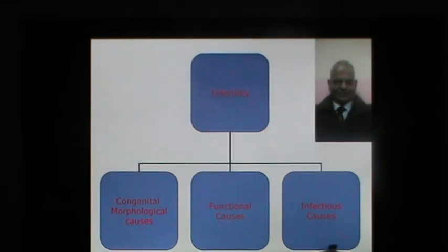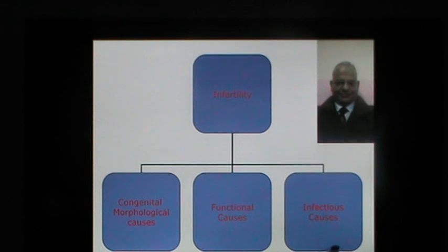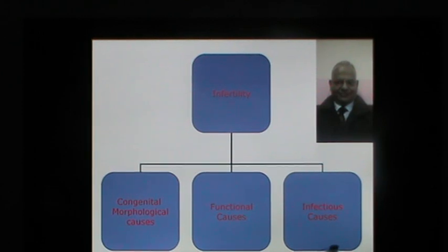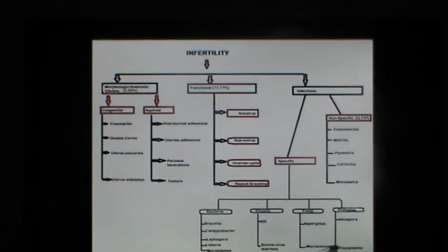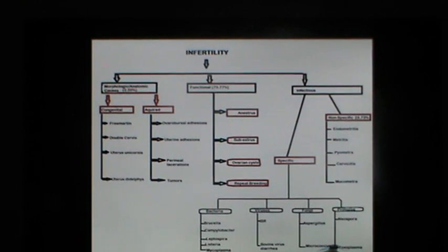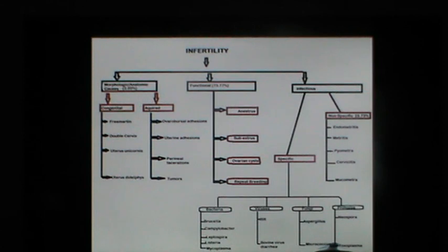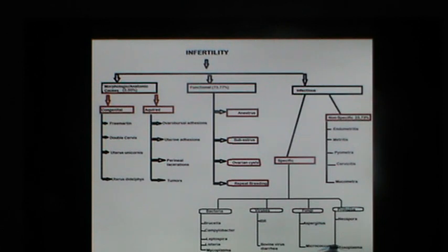Infertility in dairy cattle can be classified into congenital or morphological anatomic causes, functional causes, and infectious causes. As shown in this chart, morphological causes may be congenital or acquired. Functional causes include anestrus, sub-estrus, ovarian cysts, and repeat breeding. Infectious causes include specific infections by bacteria, viruses, fungi, and protozoa, and non-specific infections affecting the genital tract such as metritis, endometritis, pyometra, cervicitis, and mucometra. Today we focus on the congenital and acquired morphological anatomic causes of infertility in dairy cattle.